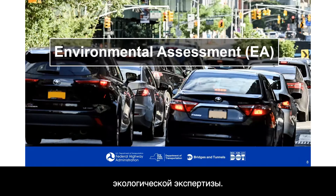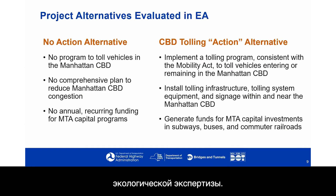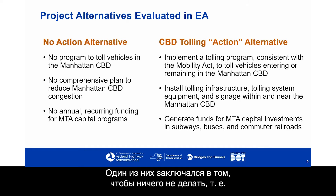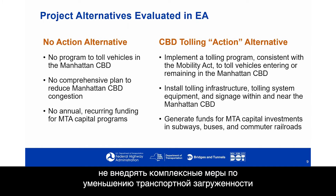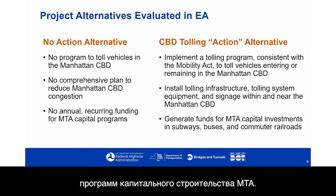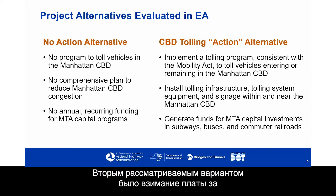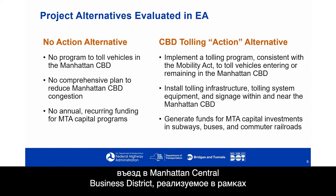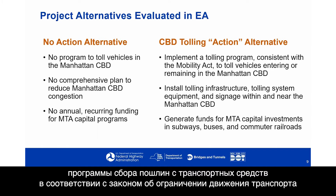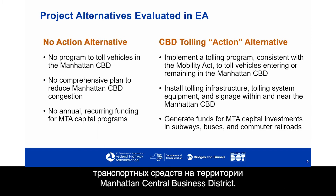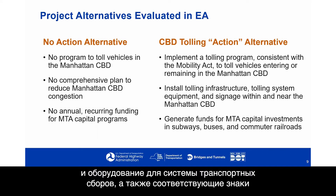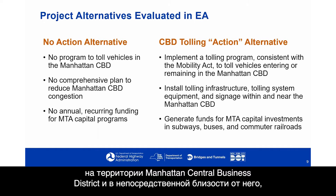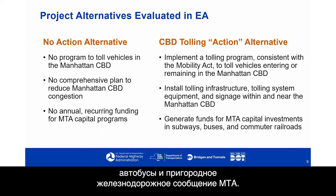There are two project alternatives evaluated in the environmental assessment. The No Action Alternative involves no program to toll vehicles in the Manhattan CBD, no comprehensive plan to reduce congestion, and no new annual recurring funding for MTA capital programs. The Central Business District Tolling Alternative implements a tolling program consistent with the Mobility Act, installs tolling infrastructure and signage within and near the Manhattan CBD, and generates funds for MTA's capital investments in subways, buses, and commuter railroads.